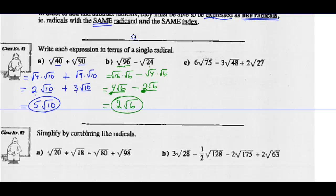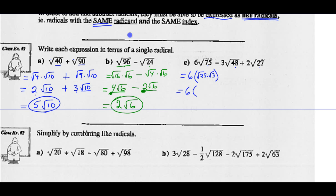Let's try example C: radical 75, radical 48, and radical 27 all look very different, but if I simplify them first and change them into simplest mixed radical form. So 6 radical 75 — we keep the 6 and change radical 75. Radical 75 can be rewritten as radical 25 times radical 3. The square root of 25 is 5, there is no square root of 3. So 6 times 5 root 3 — 6 times 5 is 30 radical 3. So 6 radical 75 simplifies into 30 radical 3.